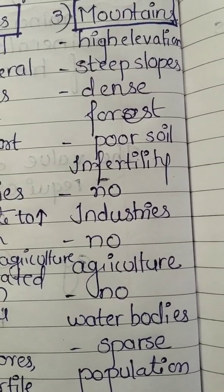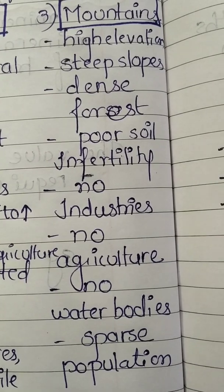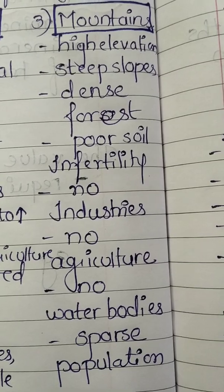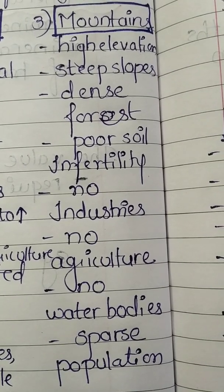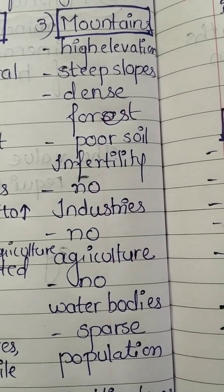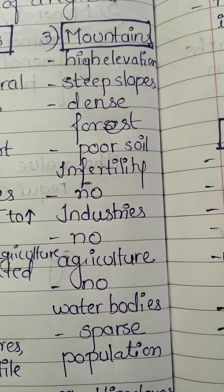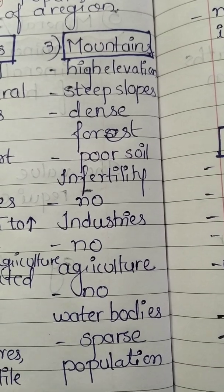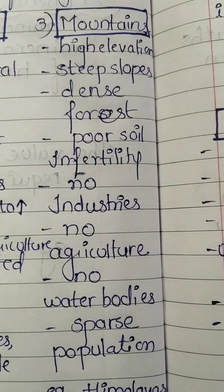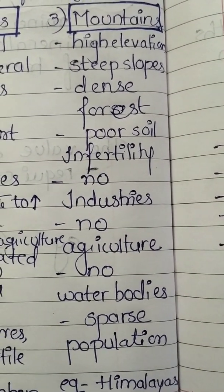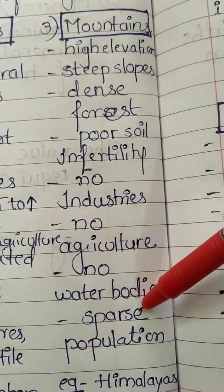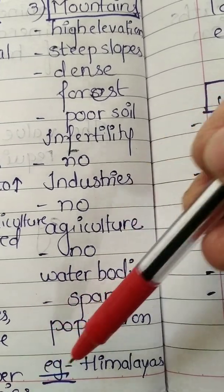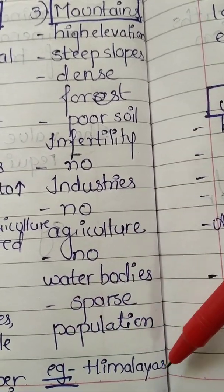Due to high elevation and steep slopes, transportation is not well developed in mountain areas. There is no industrialization, no agriculture, and no significant water bodies, since water drains out quickly from the steep slopes. As a result, the population in mountainous areas is always sparse. An example is the Himalayas.